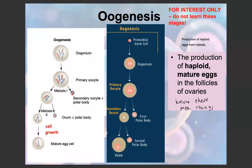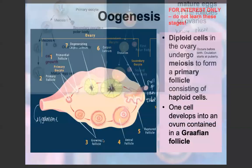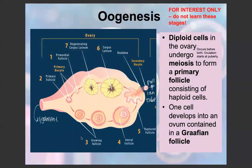The formation of mature egg cells in females is called oogenesis. It produces haploid egg cells because they're gametes. The important thing to note in contrast to spermatogenesis is that oogenesis only produces one mature egg cell, as opposed to four mature sperm cells. The diploid cells in the ovary undergo meiosis and form a primary follicle consisting of haploid cells — this occurs before birth. So in the female's body, she'll have multiple primary follicles. Each month, one cell develops into an ovum contained inside a Graafian follicle, and then it is released during ovulation.